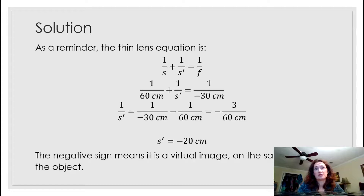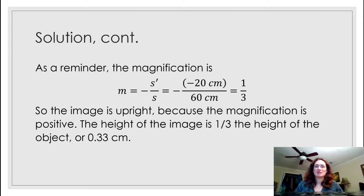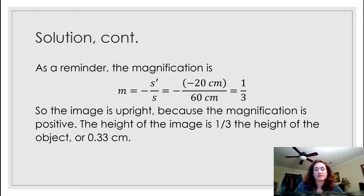Solving for S prime with simple algebra: 1/S prime = −1/30 cm − 1/60 cm = −3/60 cm, so S prime equals minus 20 centimeters. The negative sign means it's a virtual image on the same side as the object. For magnification, M = −S prime / S = −(−20 cm) / 60 cm = one-third. The image is upright because the magnification is positive, and the image height is one-third the object height, or about 0.33 centimeters.